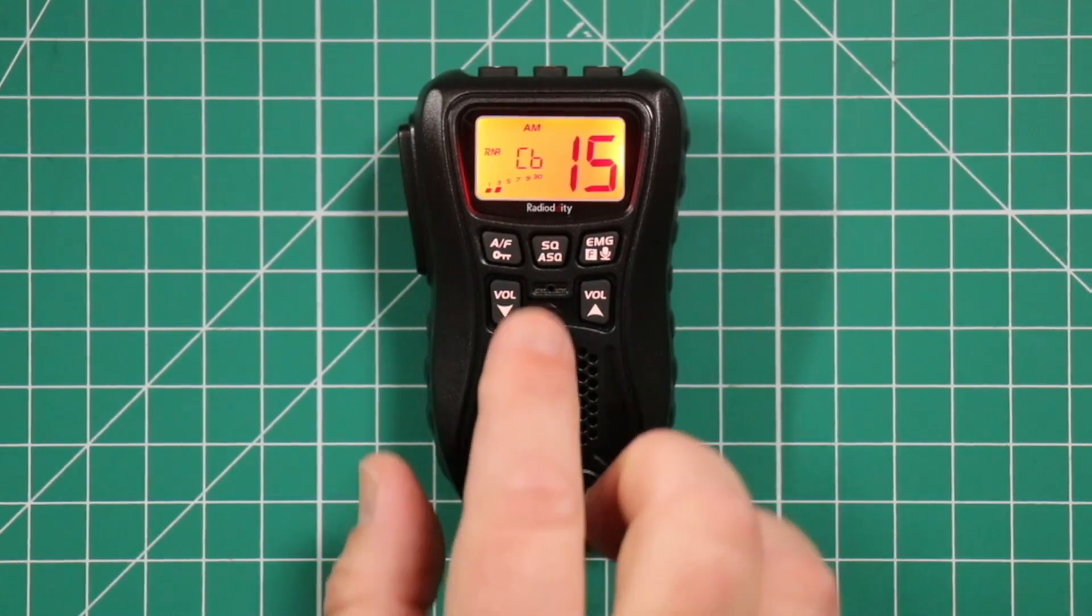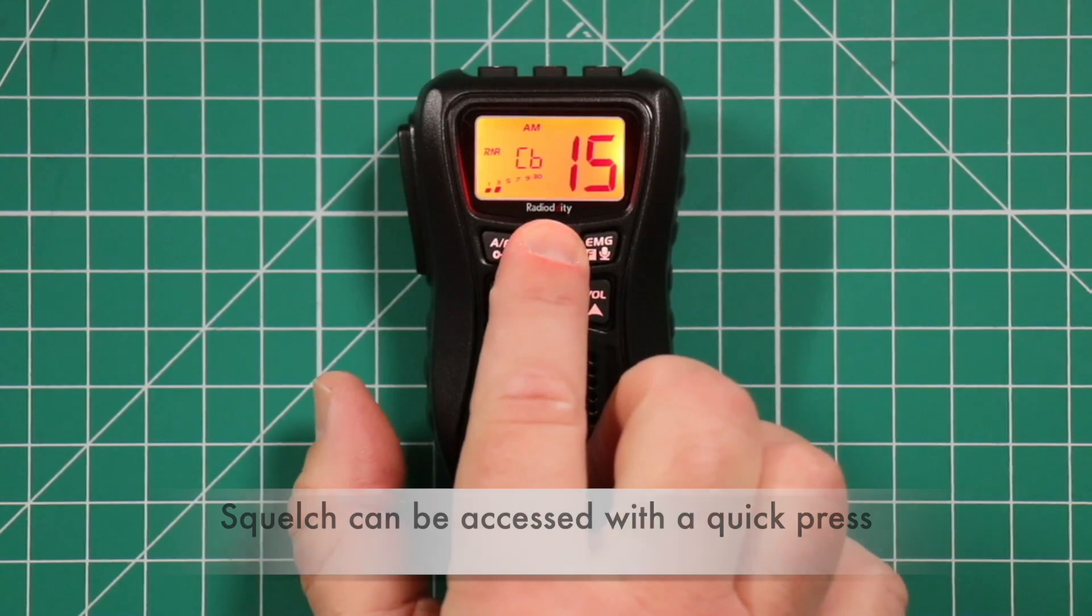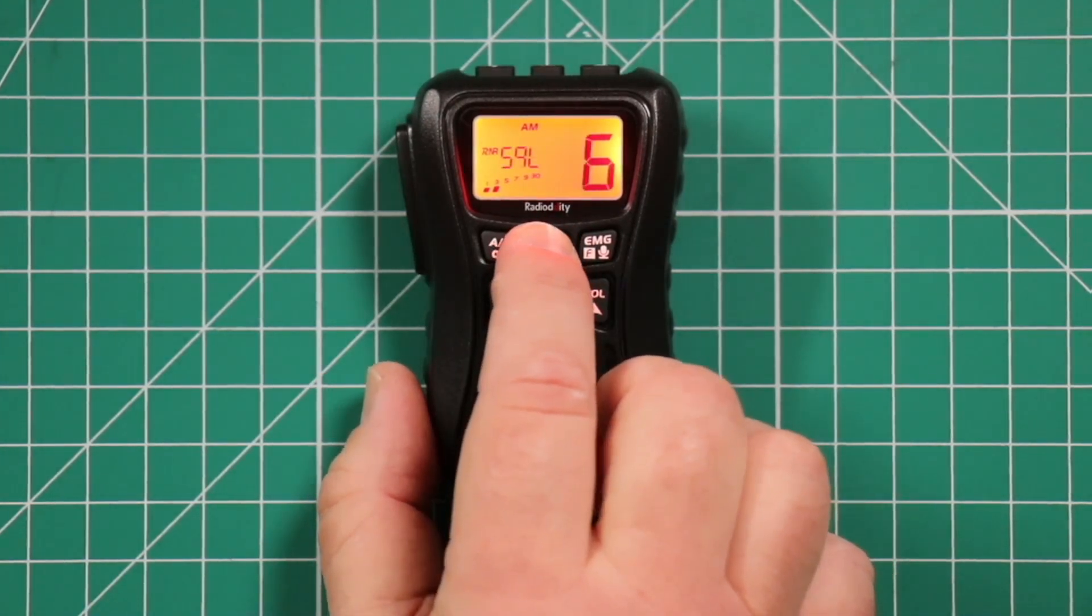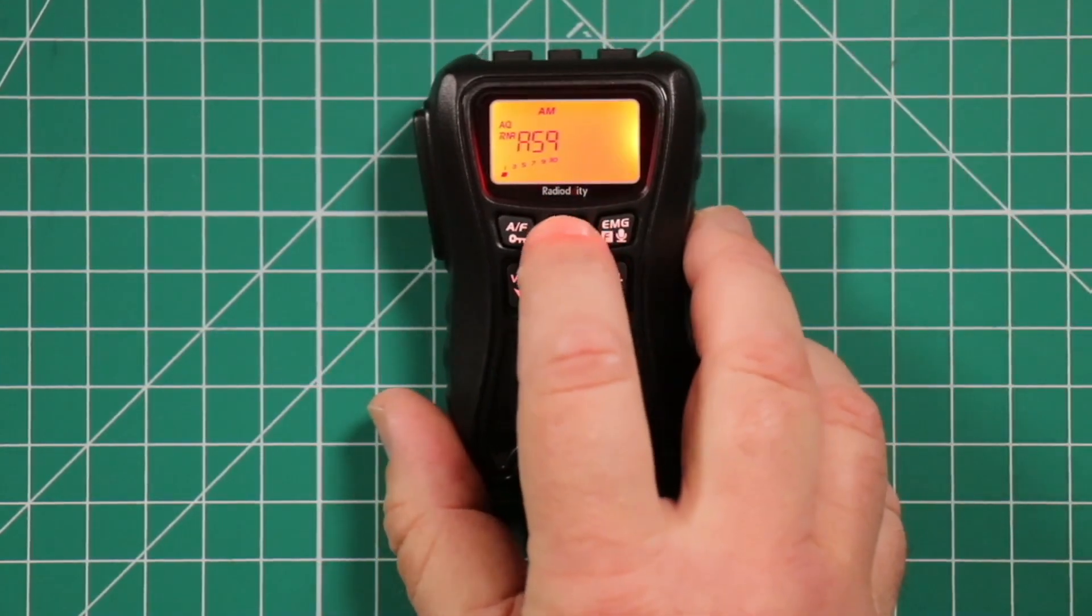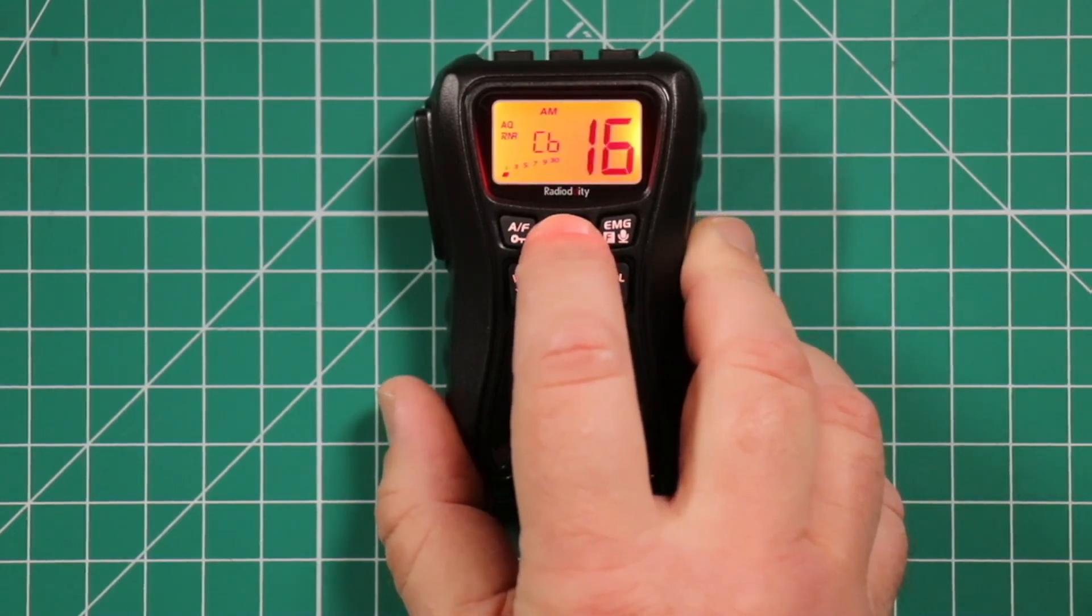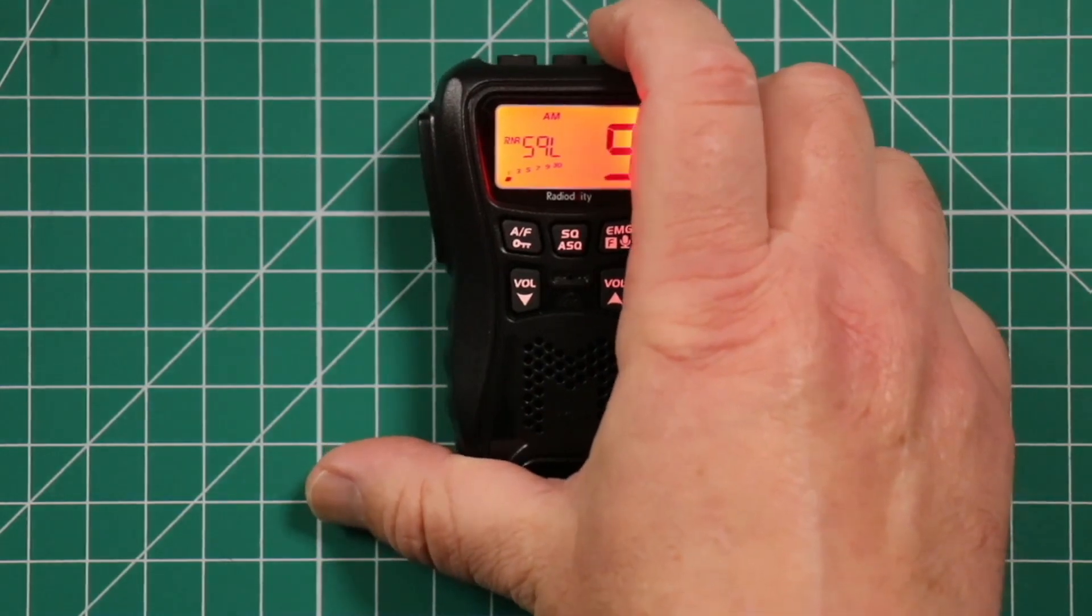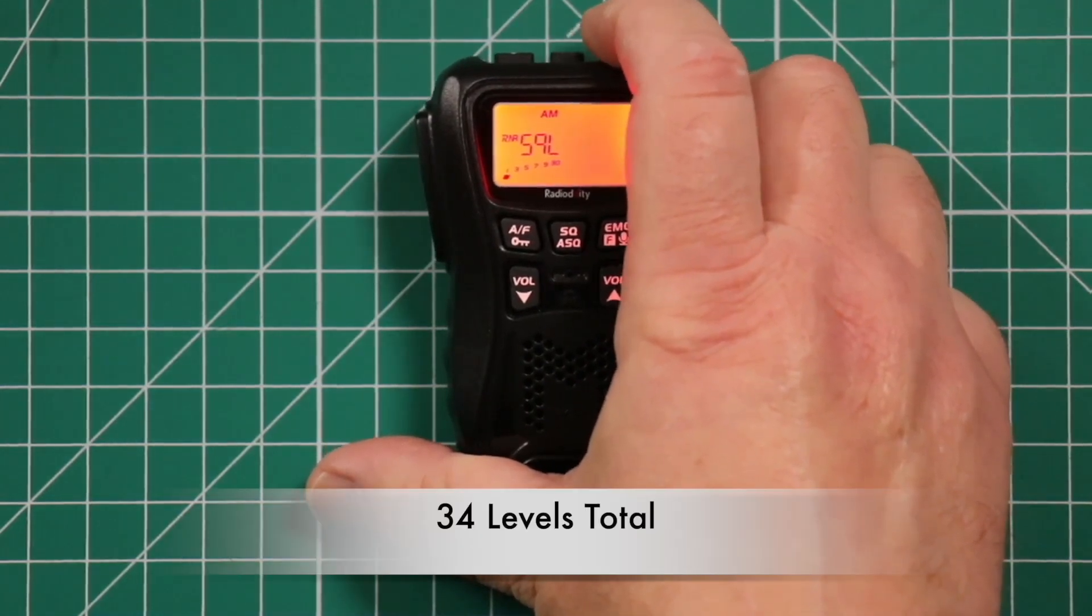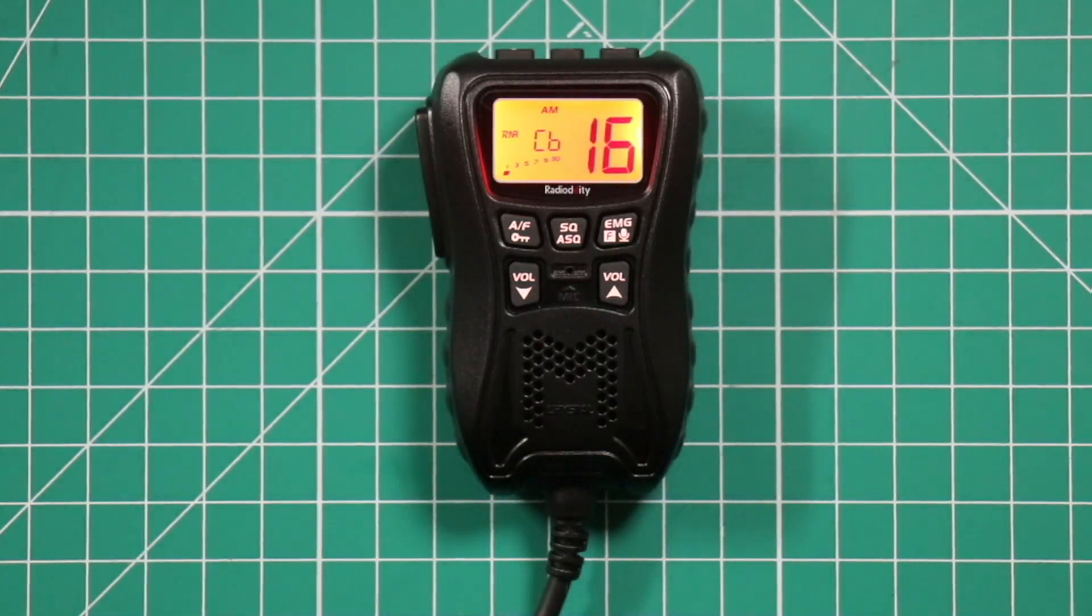To adjust the squelch, press and hold the squelch ASQ button. First one it gives you is the ASQ and you can adjust that. Press and hold again and it'll get you to squelch. Use the top buttons. You have to move faster, it's going to kick you back out. And just use the buttons on the top to adjust what setting you want. There's quite a few settings you can choose in there. Once you get set, just let it go and it'll go back to the normal operating mode.